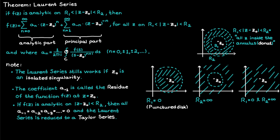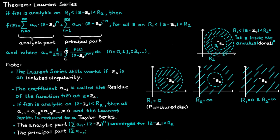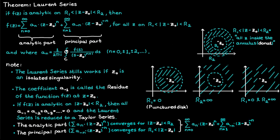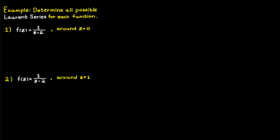These two parts of a Laurent series converge in different places in the complex plane. The analytic part converges for all c values inside the big circle r2, while the principal part only converges for c values outside the smaller circle r1. That is why the sum of these two series — which makes up our Laurent series — will only be valid for c values in between these two circles.